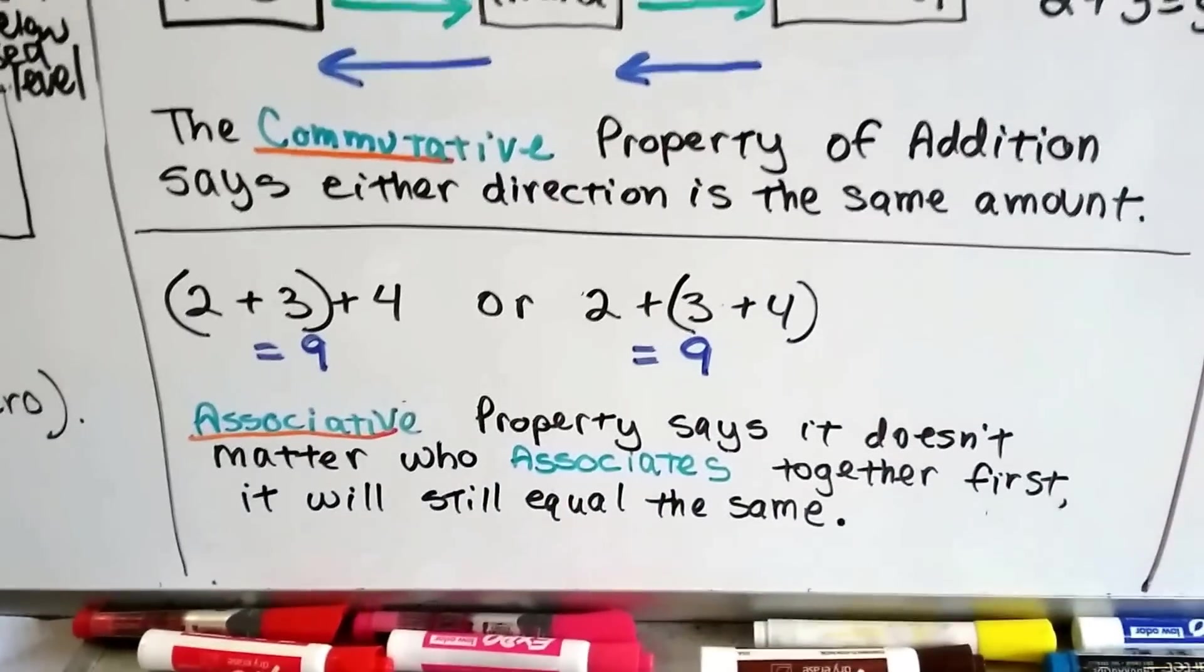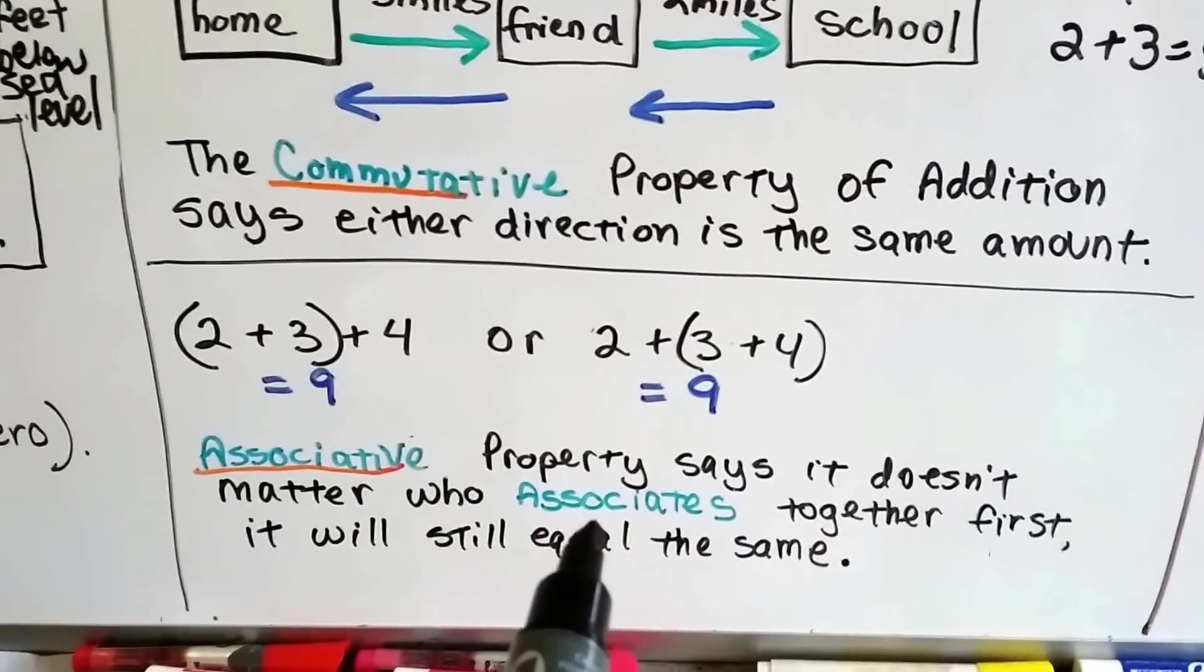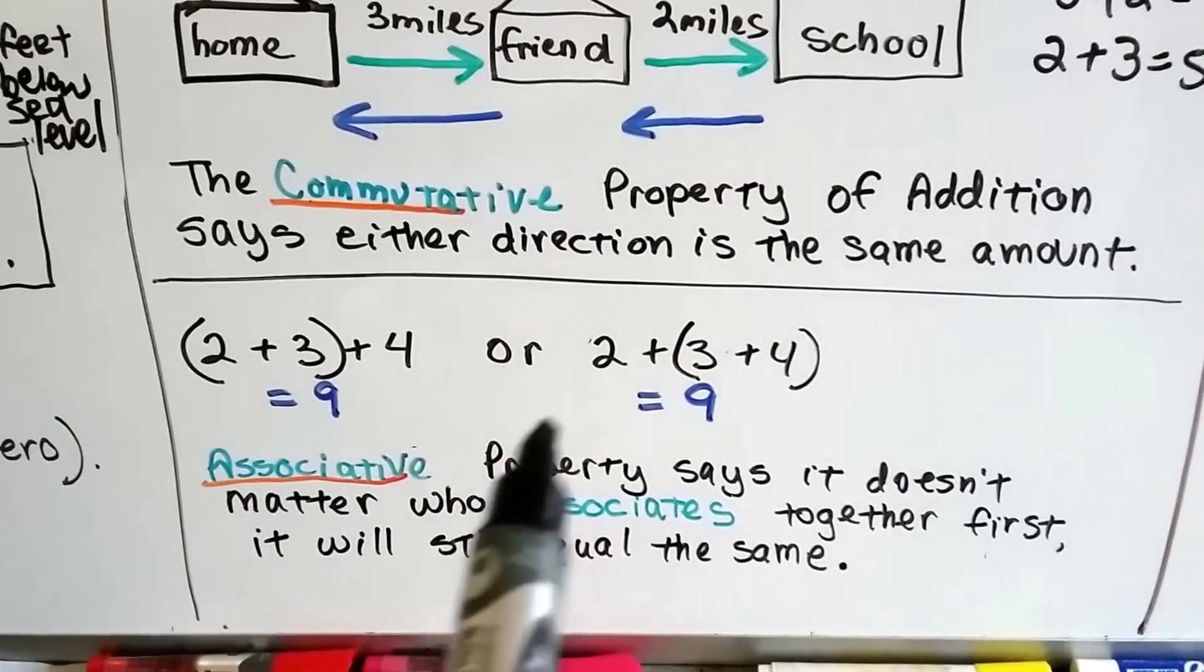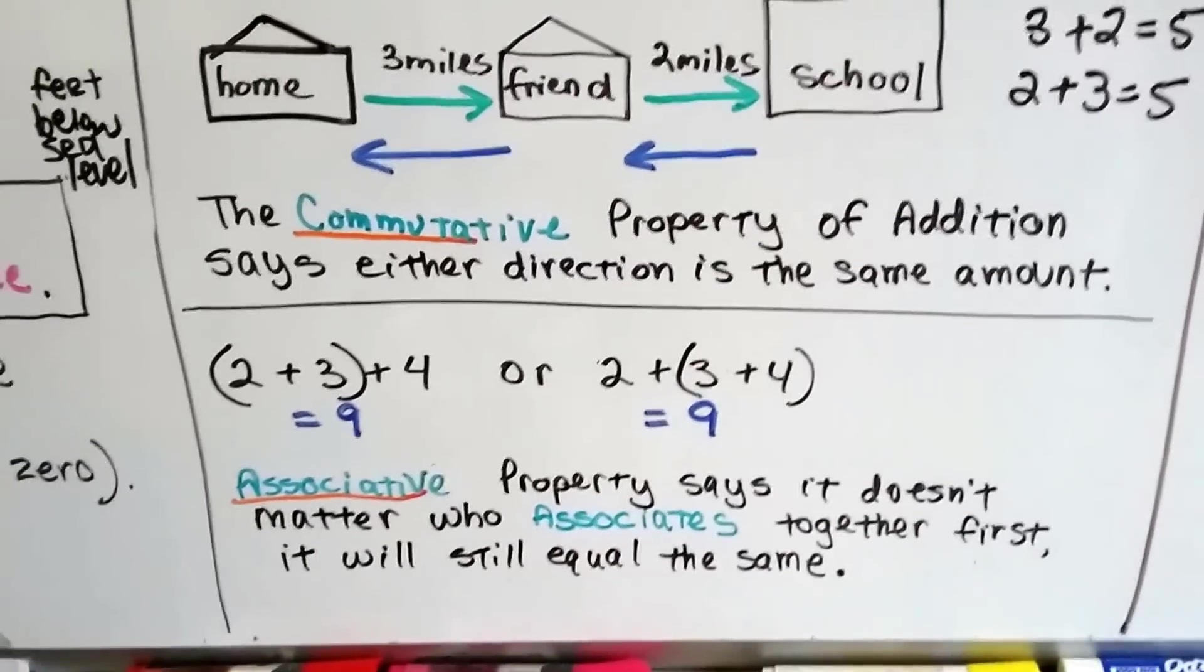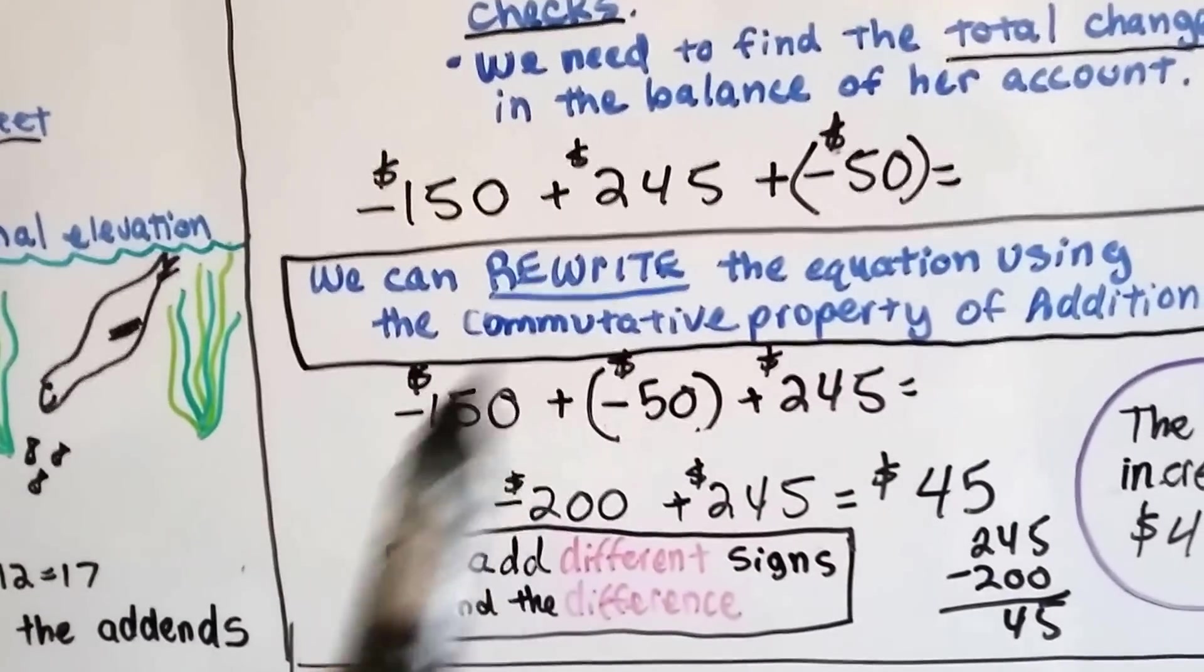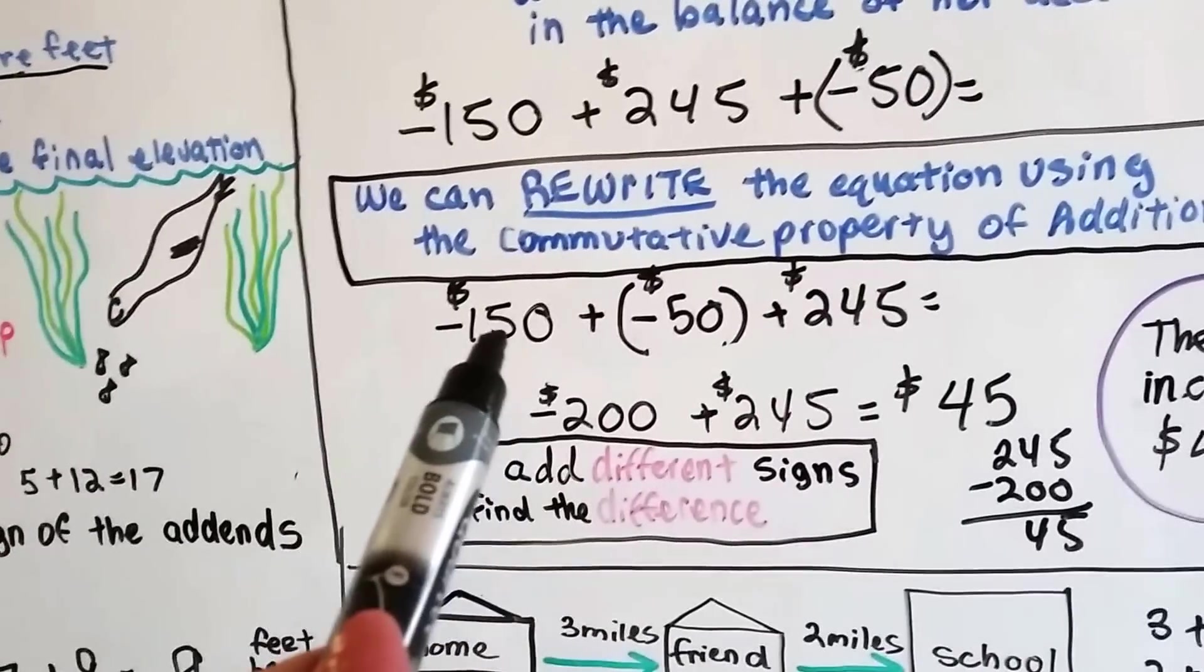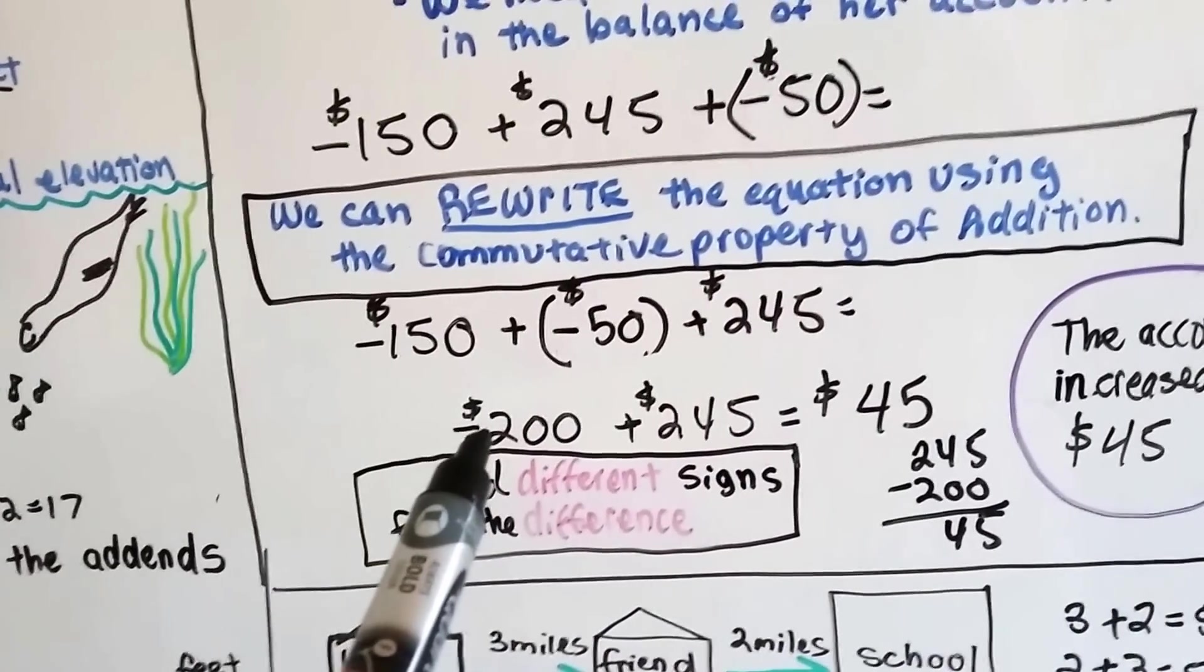The associative property says it doesn't matter who associates together. An associate is like a business associate or a friend or someone you hang out with. If the two and three associate together and then the four comes along, it's still going to equal nine if the three and the four hang out together and then the two comes along. Because of these two properties, we can move these around and make them easier on us and add compatible numbers like 150 and 50, and because their signs are the same, we just add them. 150 and 50 is 200, and because they have like signs that are negative, we have a negative 200.